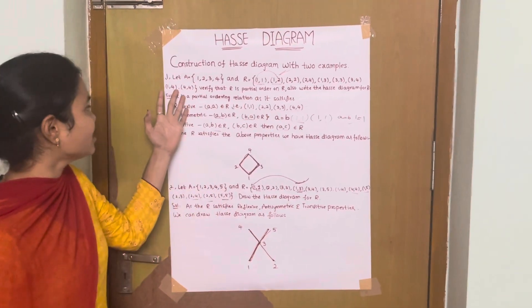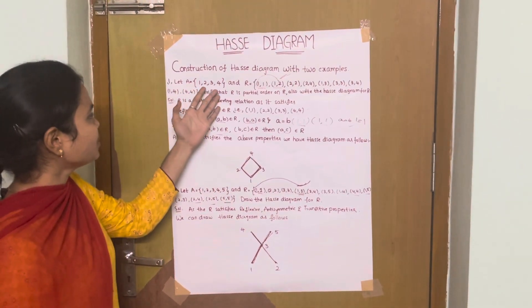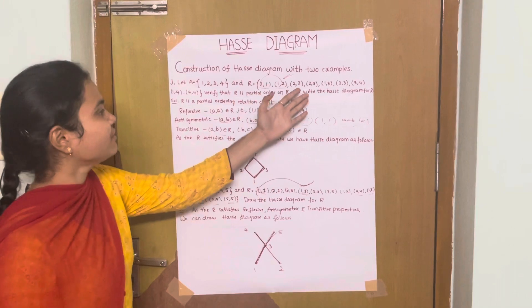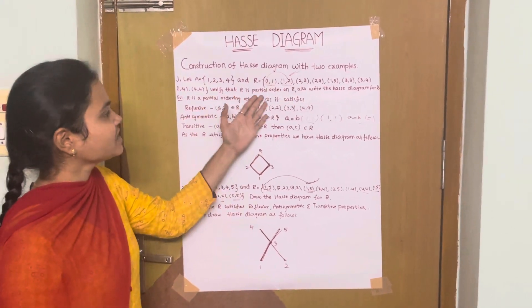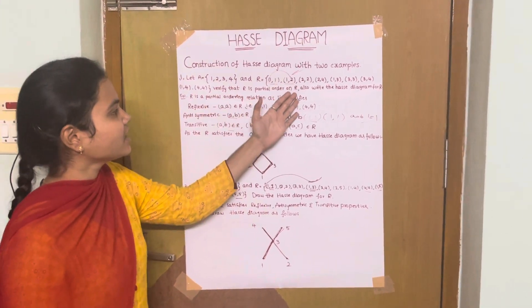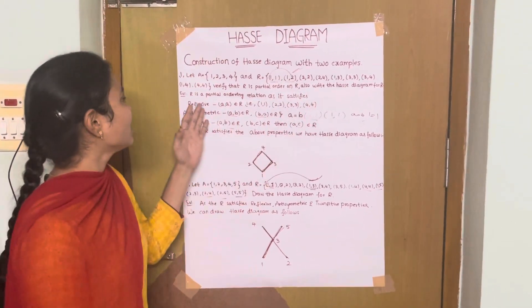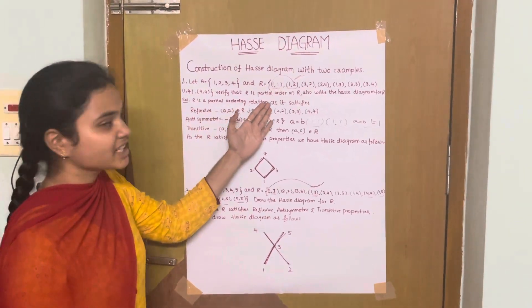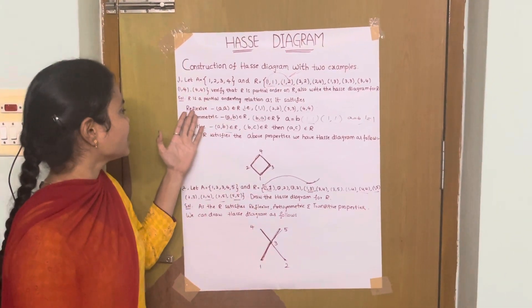Let us take an example. A contains elements 1, 2, 3, 4 and R is a relation defined in such a way. Verify that R is the partial order on A and also write the Hasse Diagram for R. R is a partial ordering relation as it satisfies the below properties.